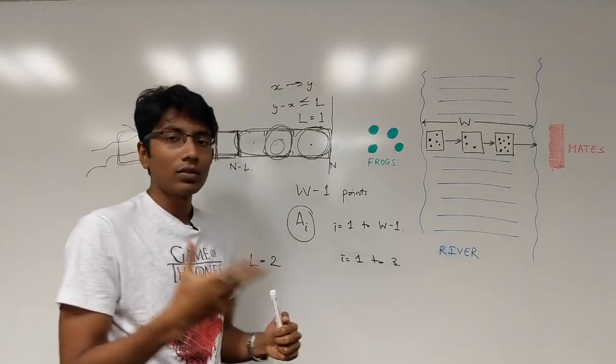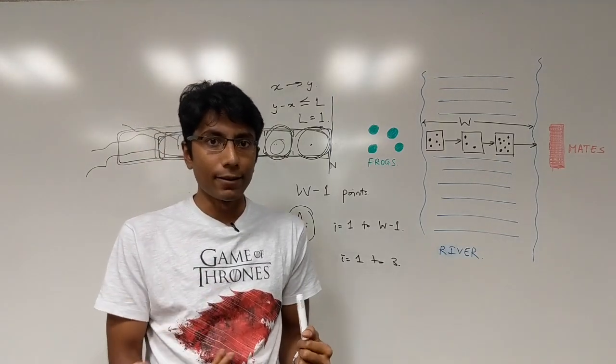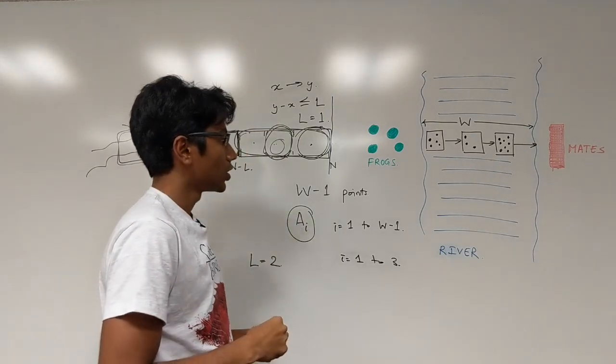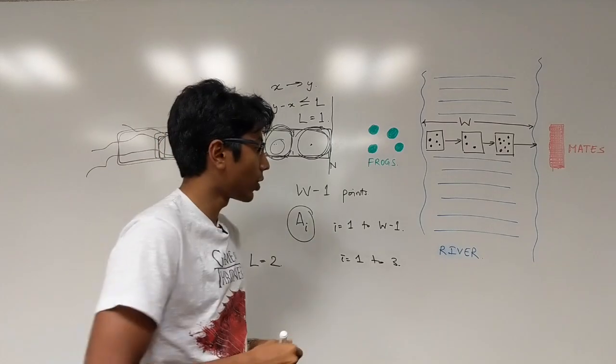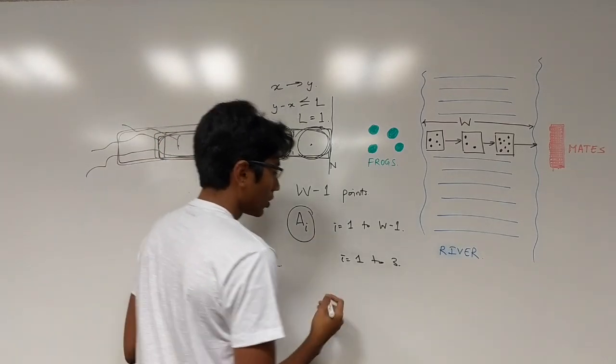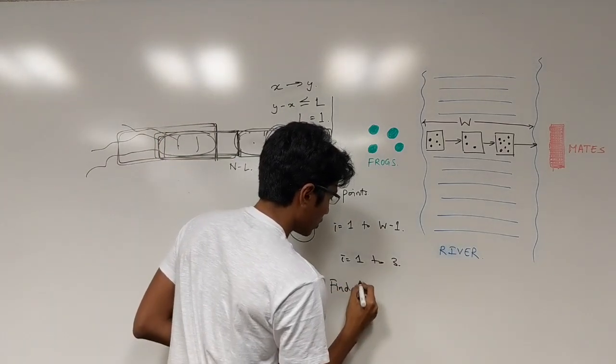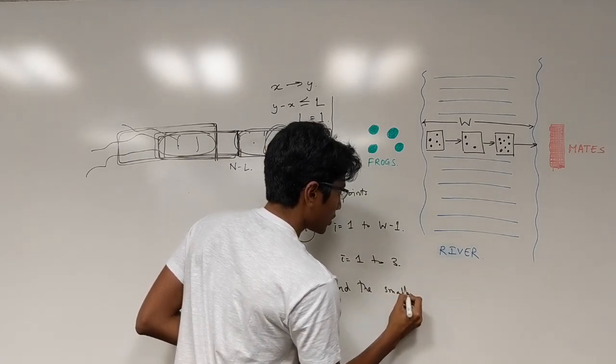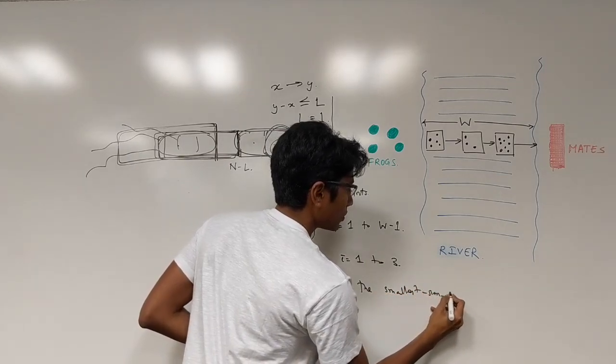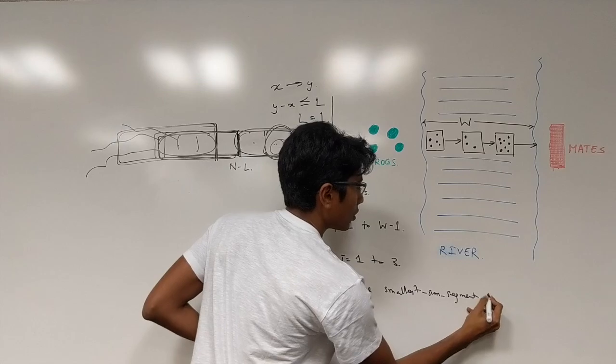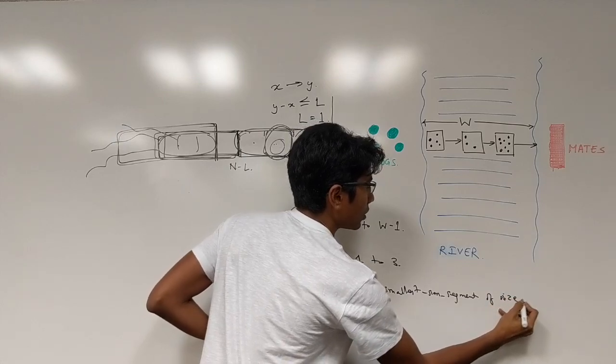So you're looking for that segment which is having the smallest total number of stones. And that segment is going to be of size L. So that's it. That's the logic of the problem.